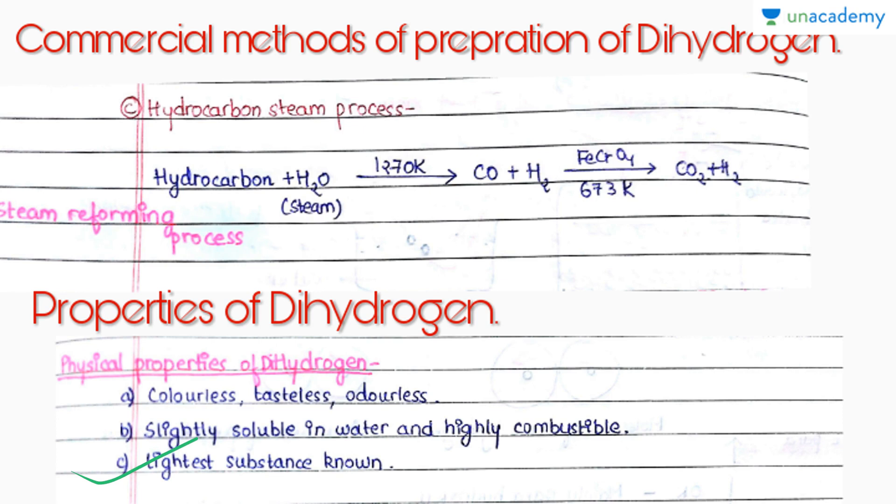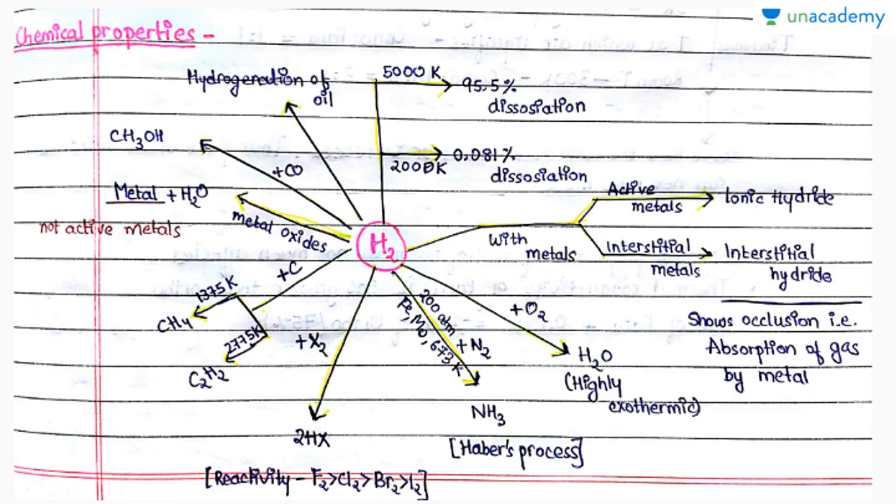Here are some chemical reactions of hydrogen. This is the dissociation reaction. When we heat H2 at high temperature, for example at 5000 Kelvin, 95.5% dissociation occurs. With metals, it forms ionic hydride when the metal is an active metal and interstitial hydride when the metal is an interstitial metal.